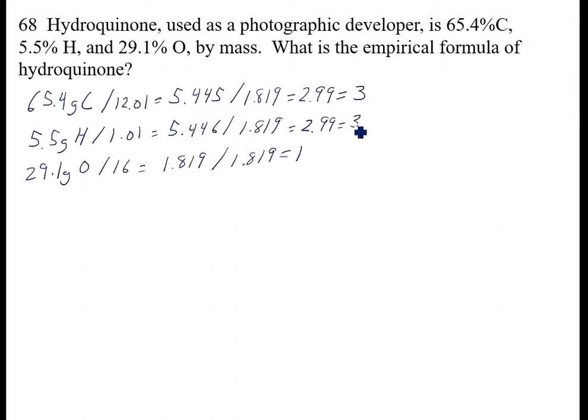This one becomes also 2.99, and again, it's 3. So the empirical formula for this is C3, because carbon to 3. Hydrogen is 3, and oxygen is 1, which I don't have to write, but if you do write, you get to put a 1 there. And this is the empirical formula for hydroquinone. And this will be the end of this video, and I'll do the second part in the next video.